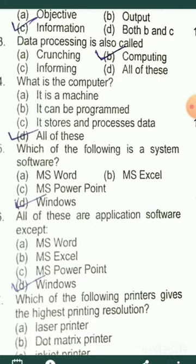What is a computer? It is a machine. It can be programmed. It stores and processes data — and all of these. So a computer has all three of these specialties.